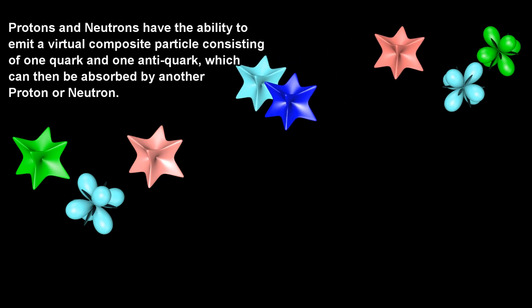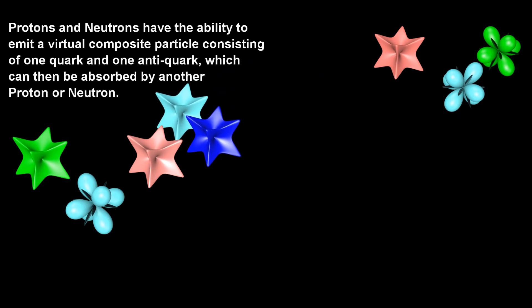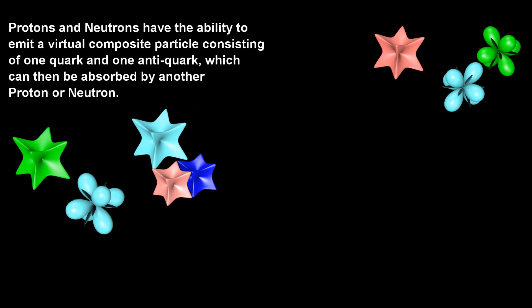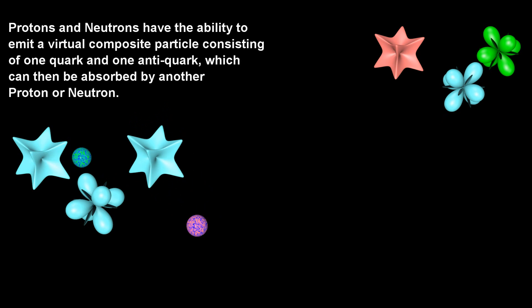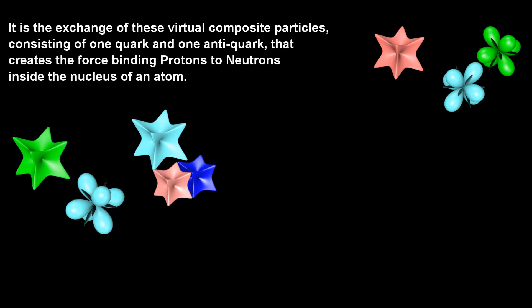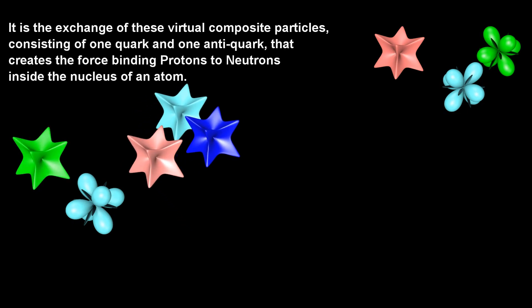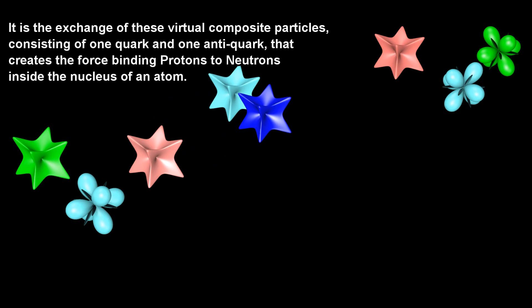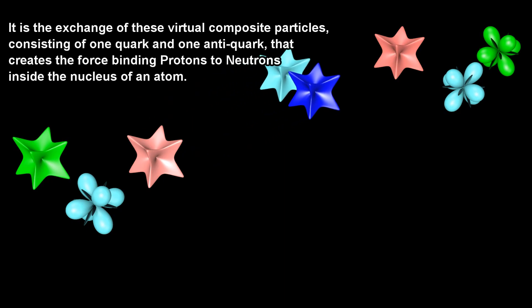Protons and neutrons have the ability to emit a virtual composite particle consisting of one quark and one anti-quark, which can then be absorbed by another proton or neutron. It is the exchange of these virtual composite particles, consisting of one quark and one anti-quark, that creates the force binding protons to neutrons inside the nucleus of an atom.